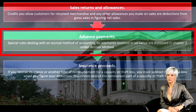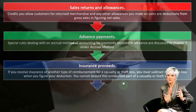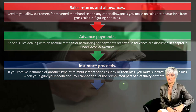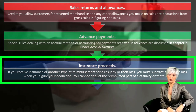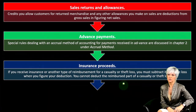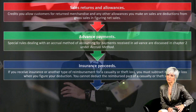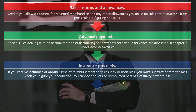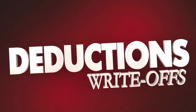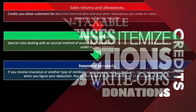You want to think about advanced payments for taxes — do you have to include them in income even if using an accrual method at the point you received them? Regarding insurance proceeds: if you receive insurance or another type of reimbursement for a casualty or theft loss, you must subtract it from the loss when figuring your deduction. You cannot deduct the reimbursed part of a casualty or theft loss. The proceeds are compensating you for a casualty, so you don't really have a net loss in that case.